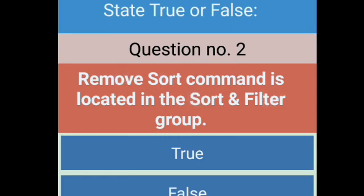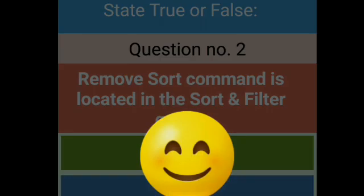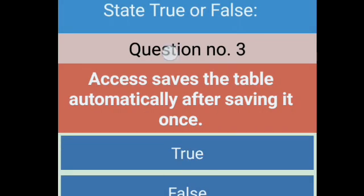Question number three: Access saves the table automatically after saving it once. Once we save a table, after that Access will automatically save it. This is true, right answer.